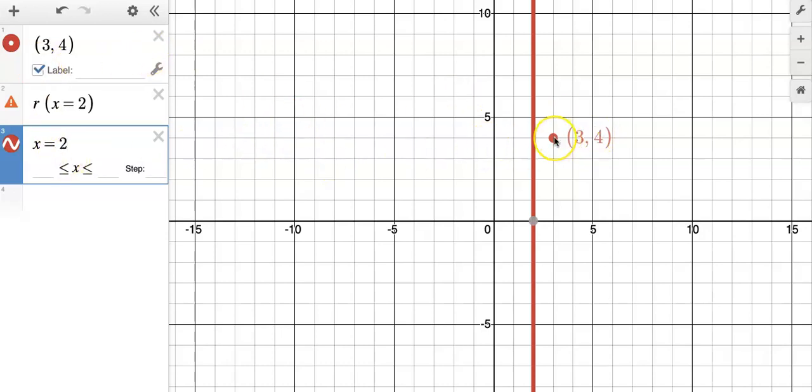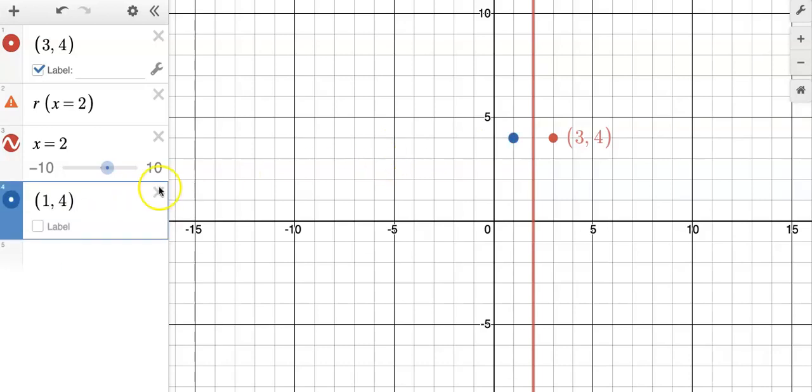So how do you do a reflection? Really easy. You count the distance, the direct distance, to the line, and then you copy and paste it to the other side. So this is one jump to the line, so I'm going one jump more to get over here. And what is that coordinate point? That is (1, 4), it looks like. There we go.